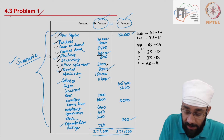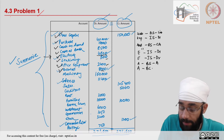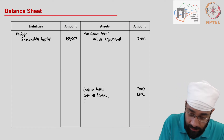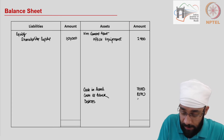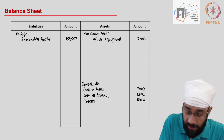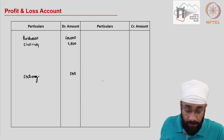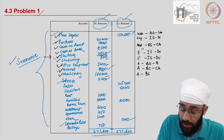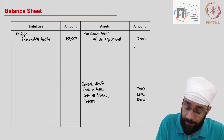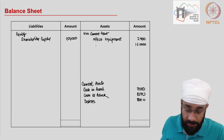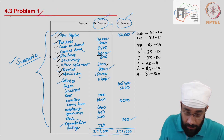Next up you have debtors 8,000. Debtors are an asset in the balance sheet under the current assets head, so I'll write debtors 8,000 and also add the heading current assets. Next is machinery 160,000 — this is an asset in the balance sheet under the non-current assets, so I'll write machinery 160,000 there.